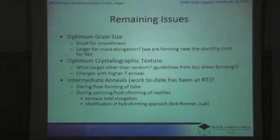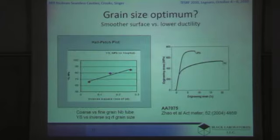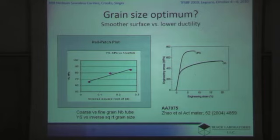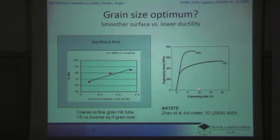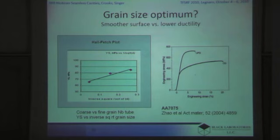One thing we might consider is that initially we thought the finer the grain size the better, because it gives a smoother surface on forming. But with a fine grain size, because of the Hall-Petch effect, you also increase the yield strength. Nature doesn't give us things for free — when you increase the strength, you decrease the ductility, because fracture of the material is a function of the energy of fracture. So we've lost some ductility compared to the coarser grain material, and we might want to look at a larger grain size, probably closer to 50 microns instead of the 20 microns we were using.